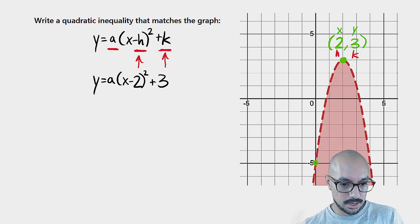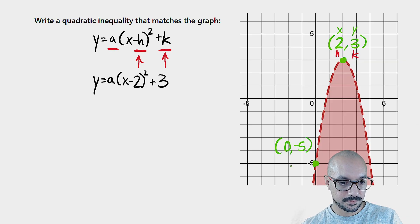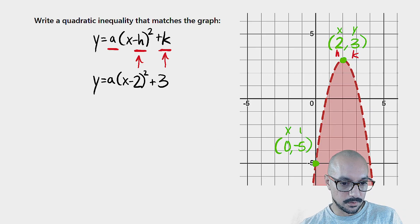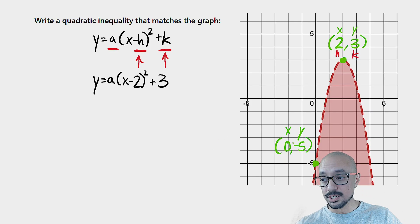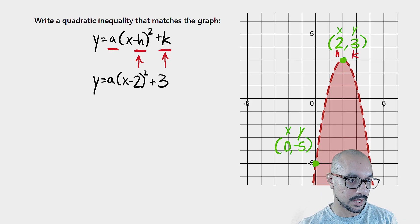So what I'm going to do is I'm going to grab a point off the graph. It looks like we have a y-intercept here. That looks like it is the ordered pair zero, negative five. And I'm just going to go ahead and plug that in for x and y. And once x and y are out of the picture, I could solve for a. Let me try that.